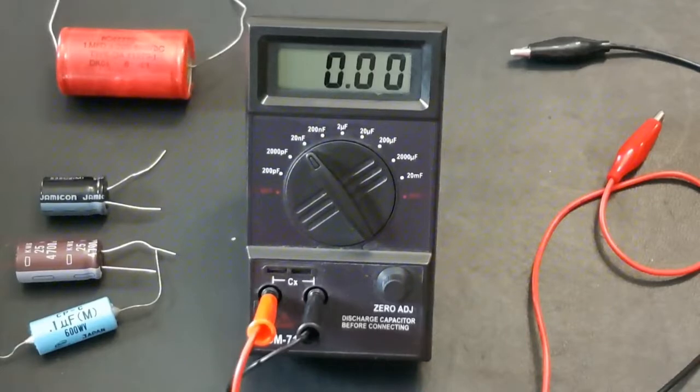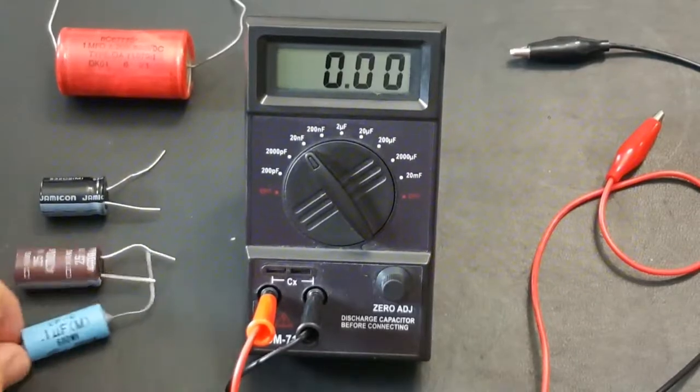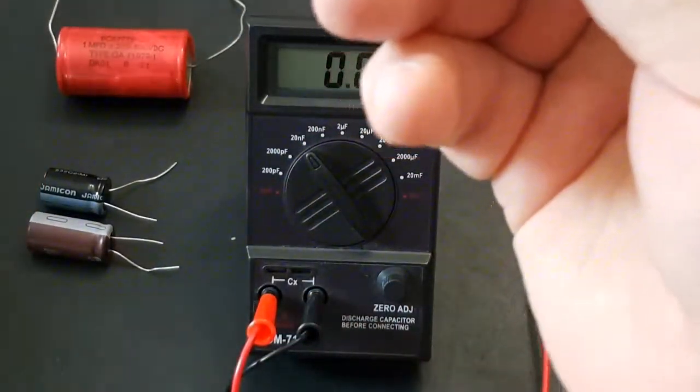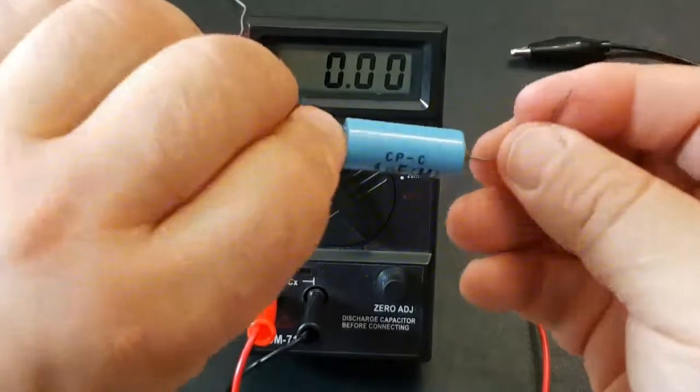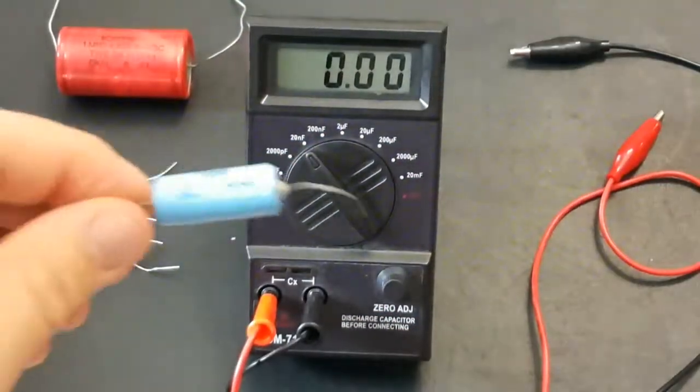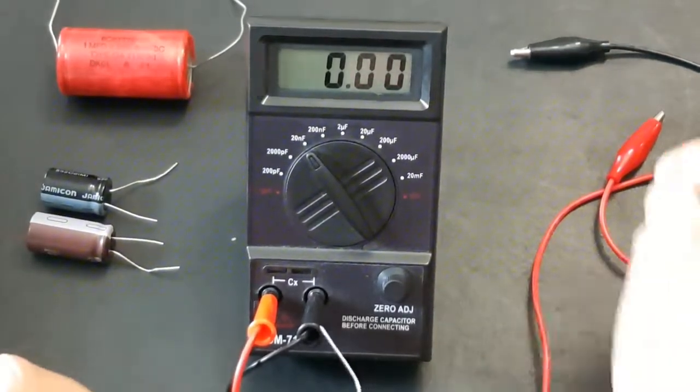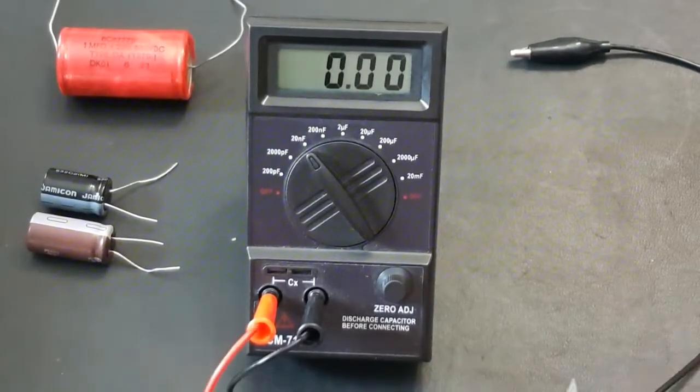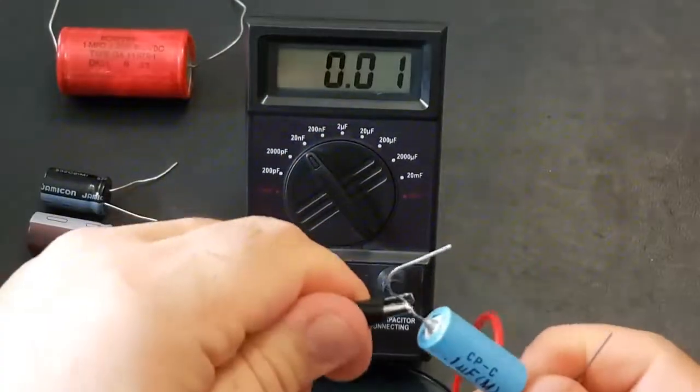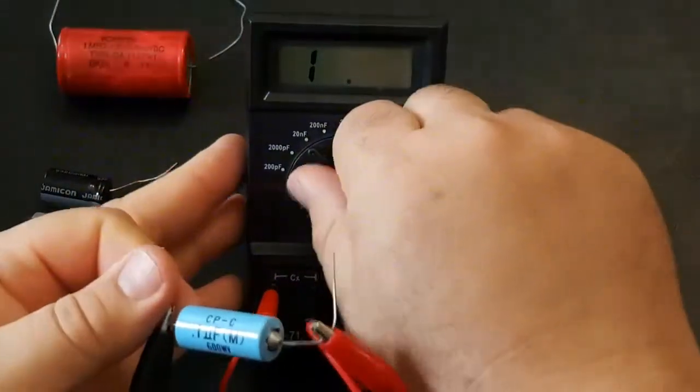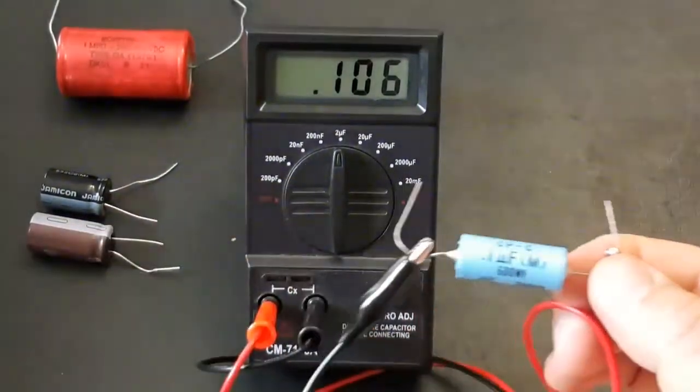So we're going to test four capacitors and we'll just see how it works. Here we go, we're going to start with this little guy. 0.1 microfarad. All the way from Japan. This is quite an old cap, probably at least 35 years old. Put the leads on. 0.1 microfarad. 200 nano. So there we are, 0.1 microfarad.